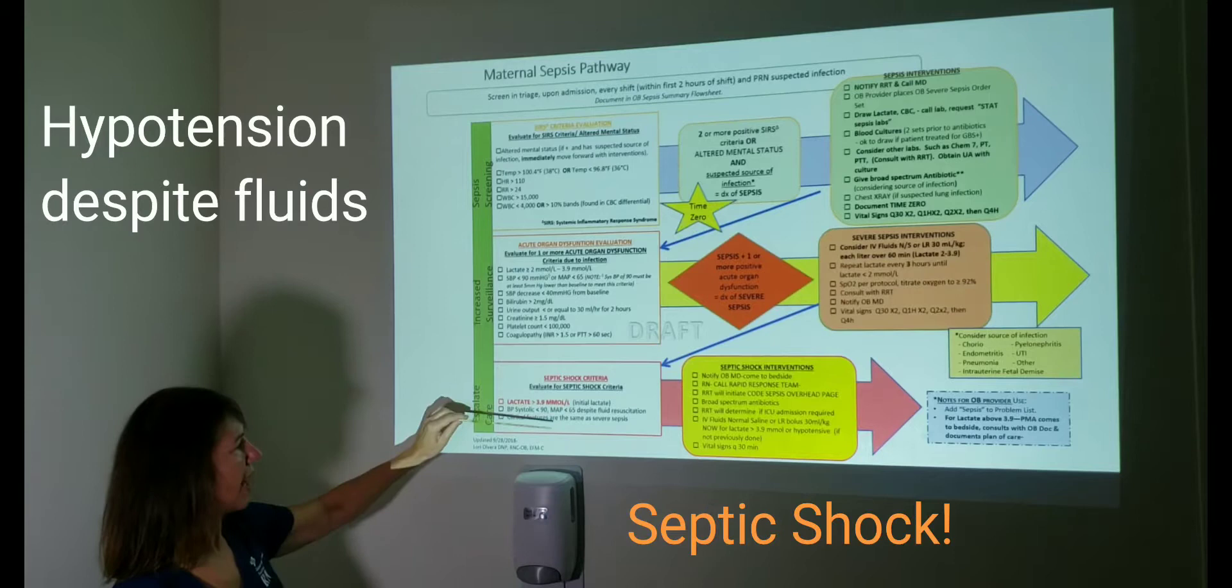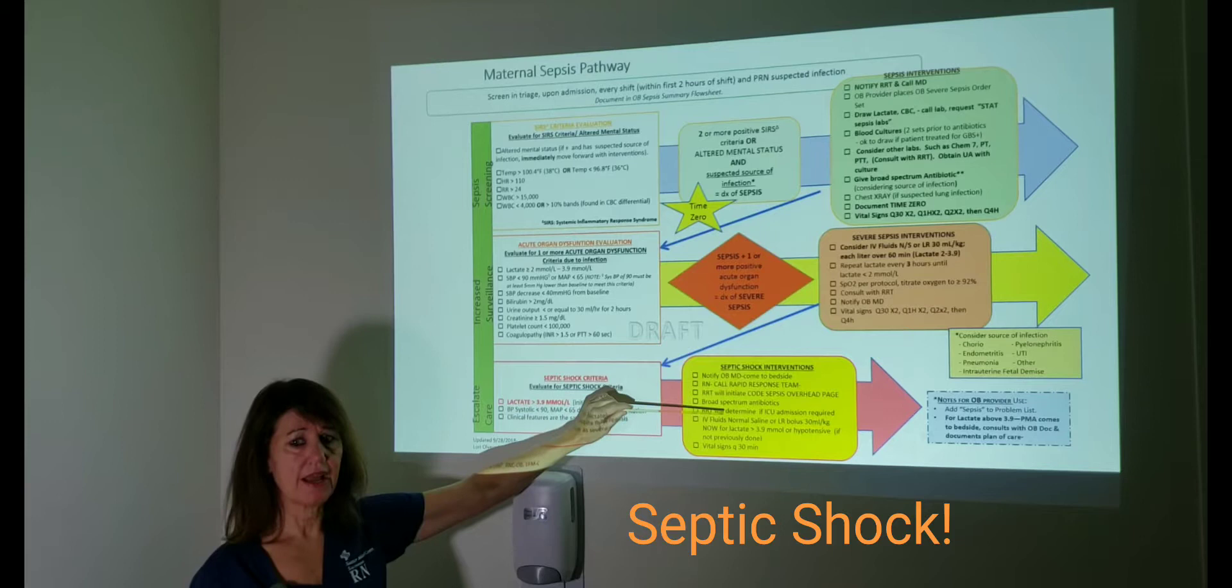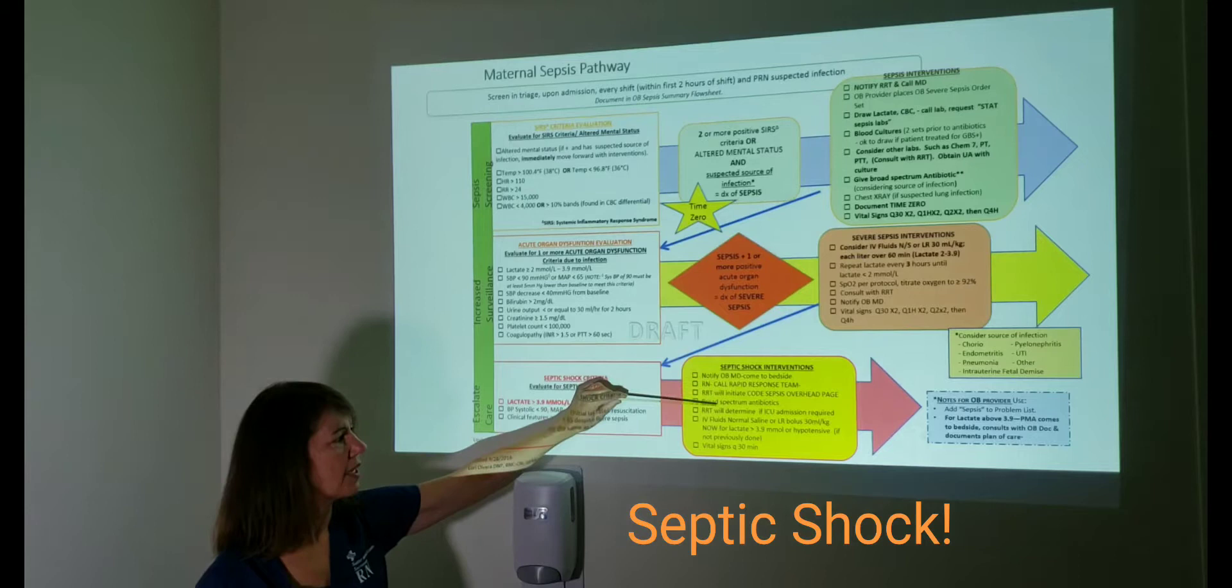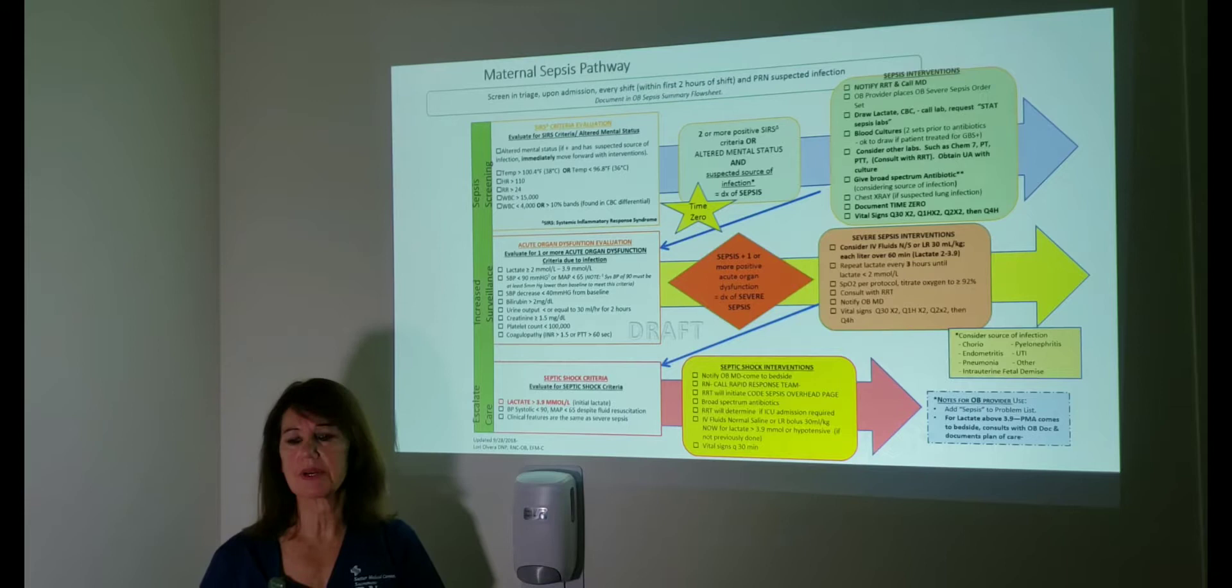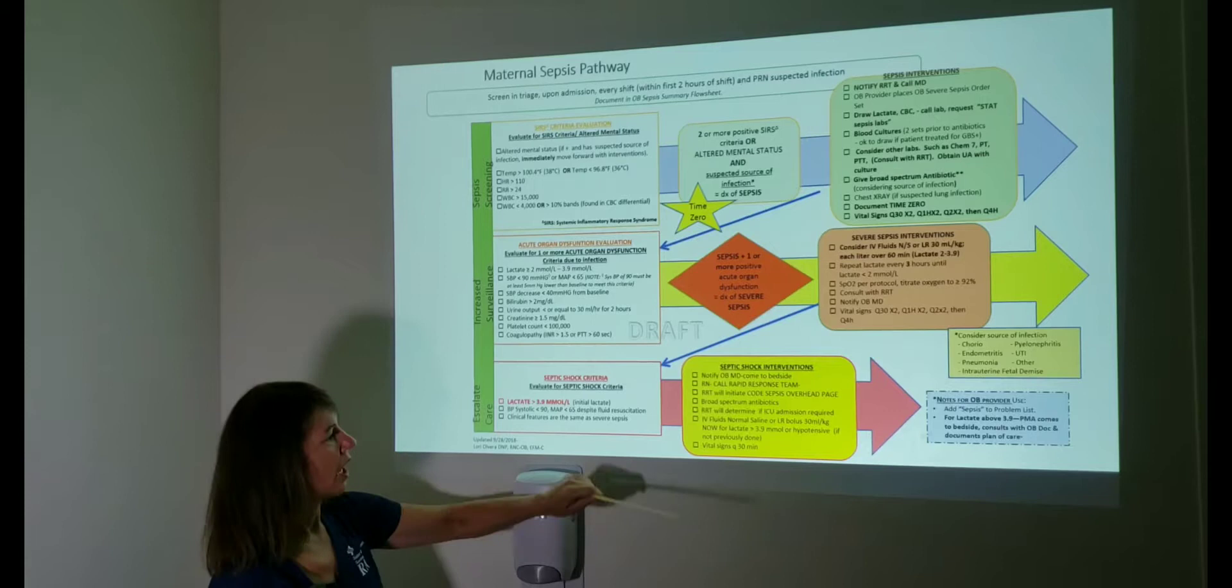If you have septic shock criteria, immediately call the RRT, get them at the bedside, have them make recommendations, call your physician, get them at the bedside. And then the RRT will initiate a code sepsis overhead. And it's really important. They call the code sepsis, the PMA will come to the bedside and do a collaborative discussion with the obstetrician, decide where is the best place for this patient and how should we manage.